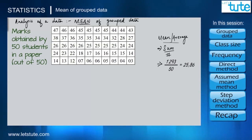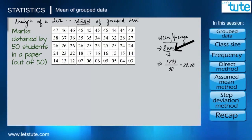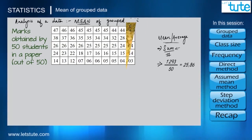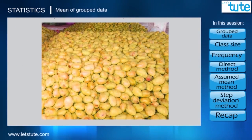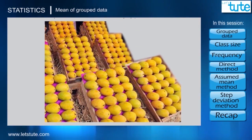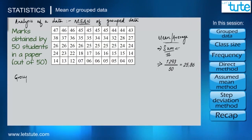There is nothing wrong with calculating the average this way, but the hitch is that calculating the sum becomes quite tedious when the data is large, even with a calculator. Whenever we have something in large amounts and want to work with it, we naturally try to divide it into smaller groups so we can handle it more easily. So we will do the same with this large data and divide it into smaller groups.